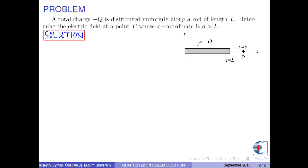Assume that at position x, there is a differential charge dq in a differential length dx. In order to find the electric field at point P, we assume that there is a positive test charge at this point. Because dq is also a negative charge, the electric field at point P due to dq is drawn from P to dq.